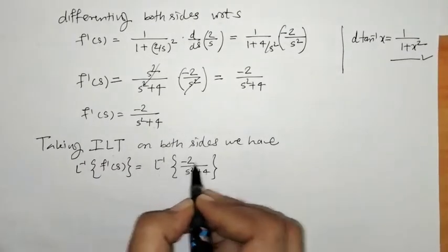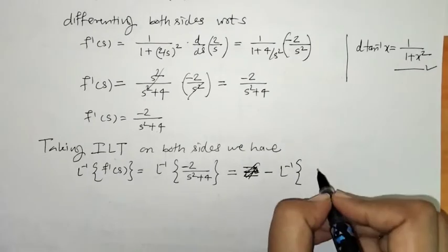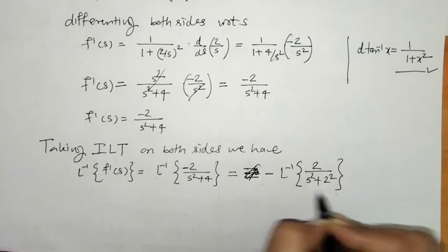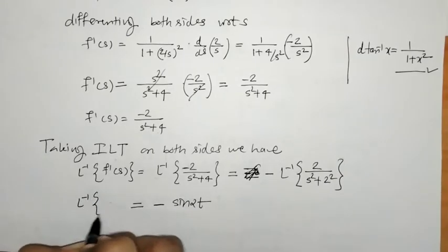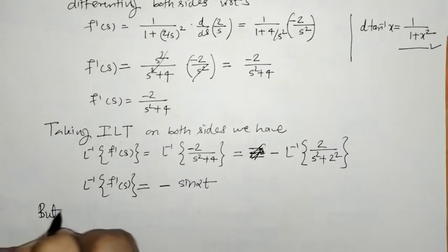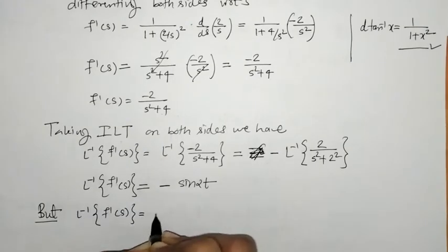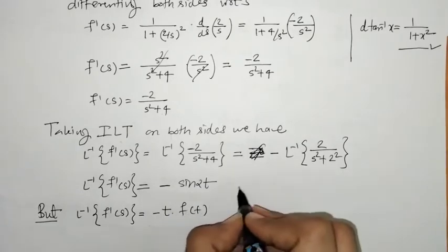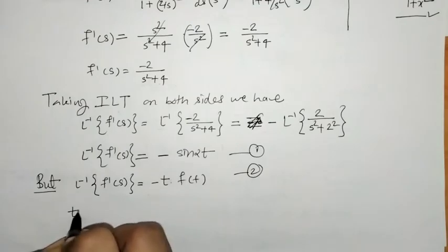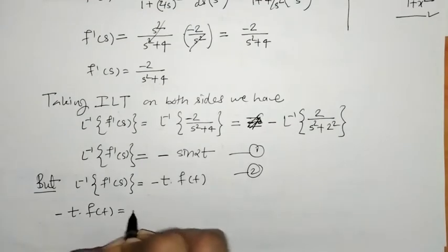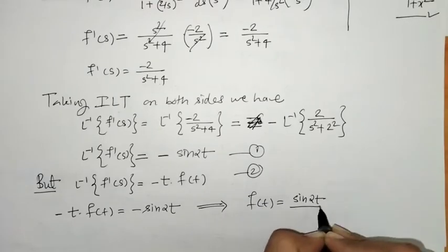Taking inverse Laplace: L-inverse of F'(s) = L-inverse of −2/(s²+2²) = −sin(2t). By the property, L-inverse of F'(s) = −t·f(t). Comparing these: −t·f(t) = −sin(2t), so f(t) = sin(2t)/t. This is the required inverse Laplace transform of tan⁻¹(2/s).